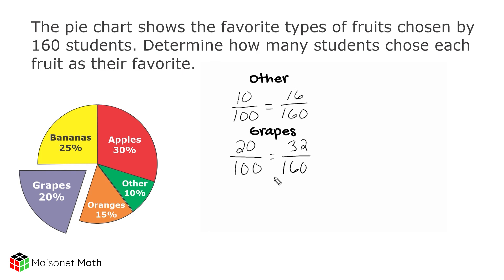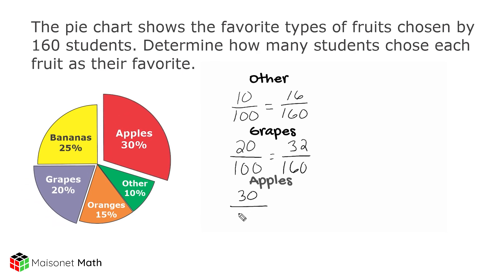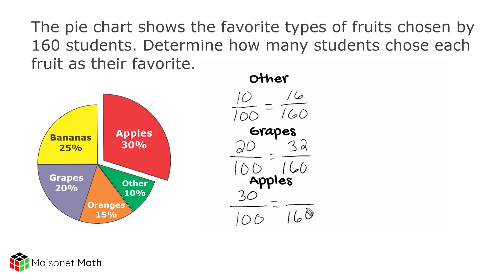Now let's go on to 30%, which is what percentage of the students chose apples as their favorite. We know that 30 is 3 times bigger than 10%, which means 3 times as many students chose apples as their favorite. So we're going to take 16 and multiply that by 3, which is 48.